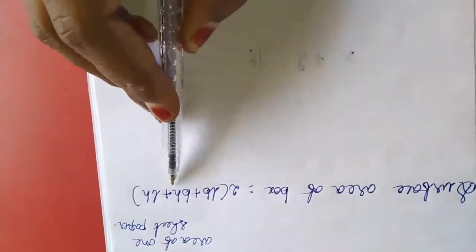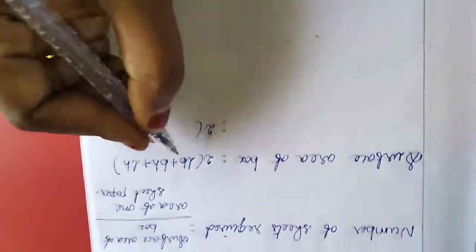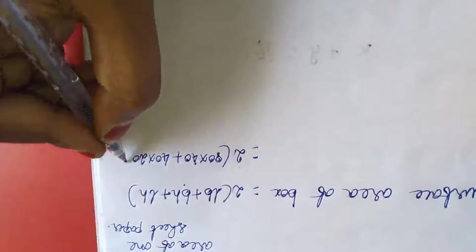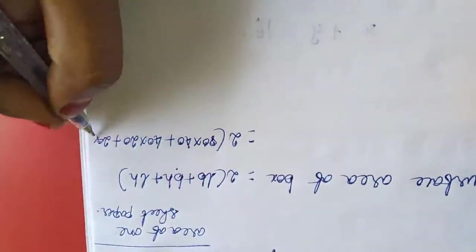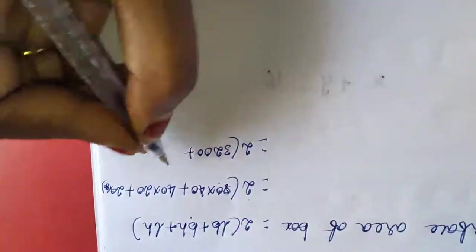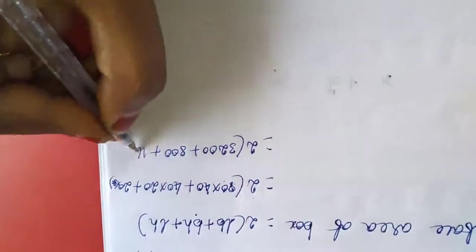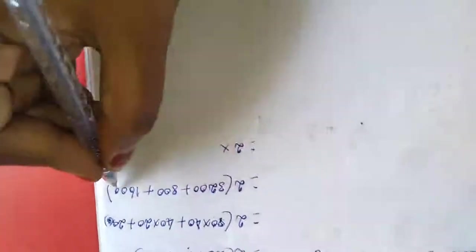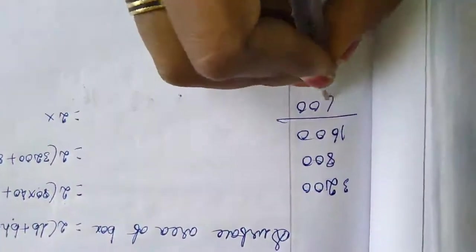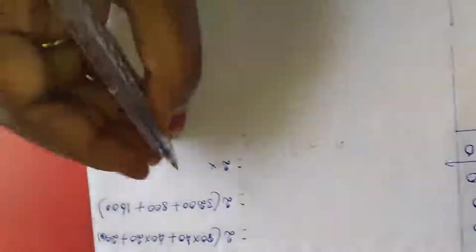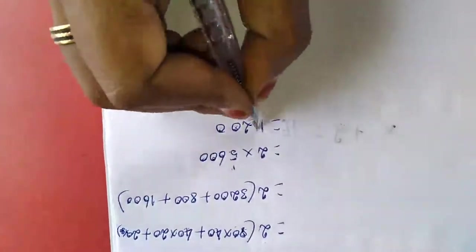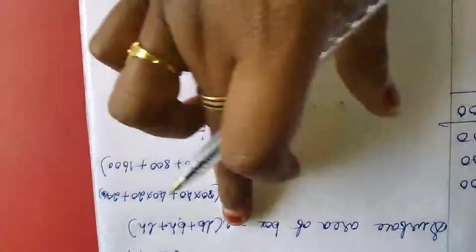Surface area of box is 2 into LB plus BH plus LH. So 2 into 80 into 40 plus 40 into 20 plus 20 into 80. If you multiply, 8 times 4 is 32, so 3200 plus 800 plus 1600. Adding these: 5600. Then 2 into 5600 equals 11200 cm square. This is the surface area of box.